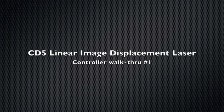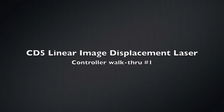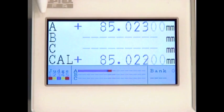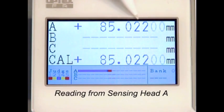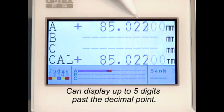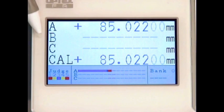This is a brief walkthrough video of the main screen on the CD5 series controller. The controller has a 4.5 inch LCD display. The display can read out the measurement data of up to three sensors at the same time.